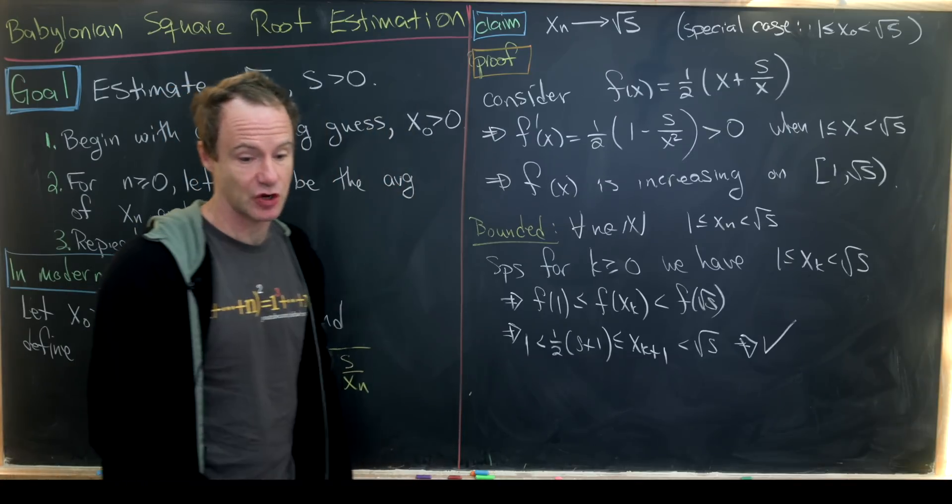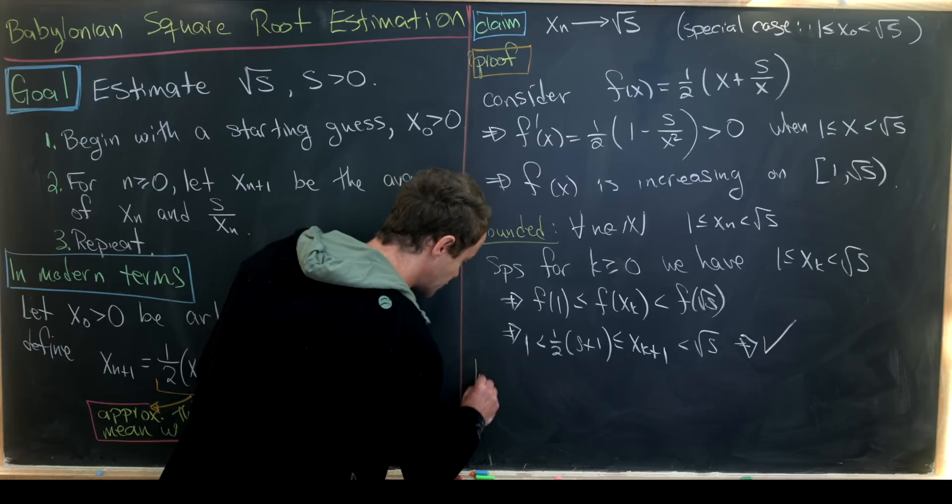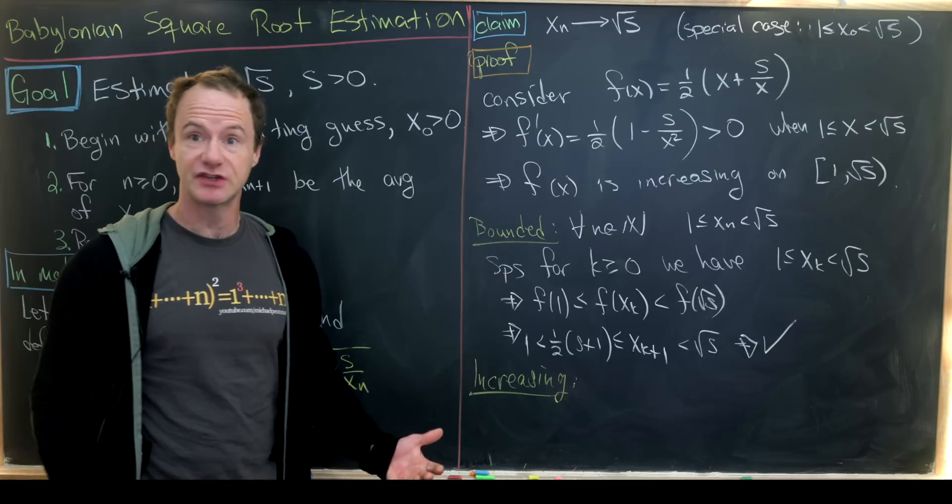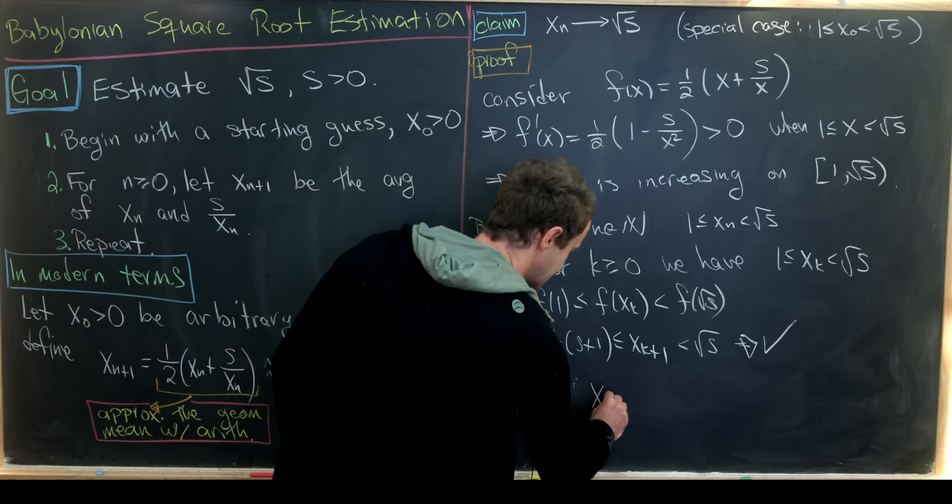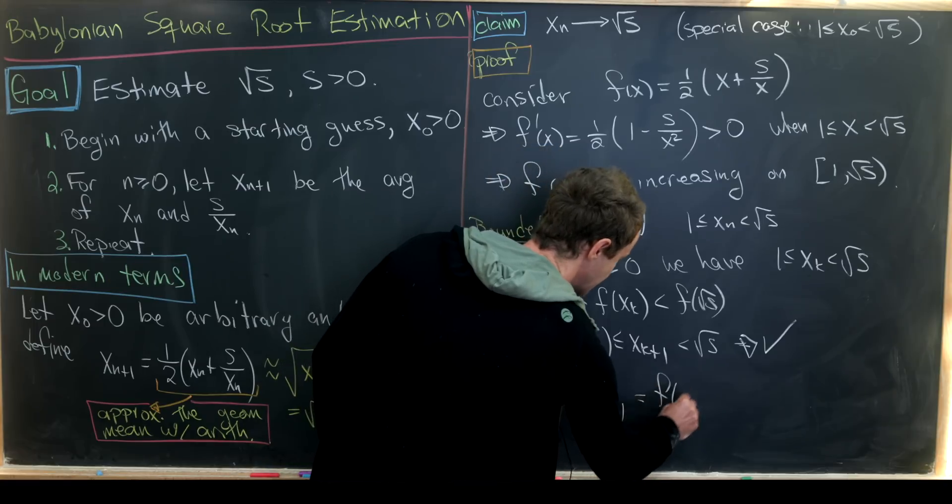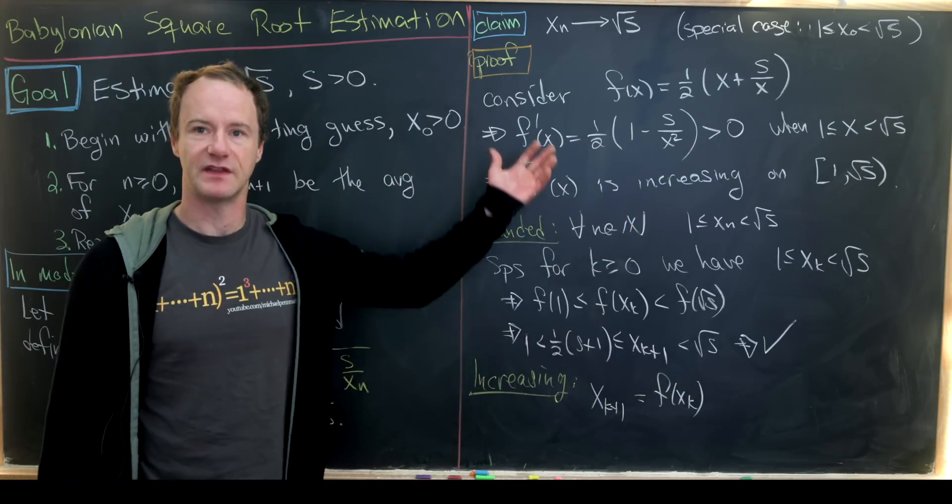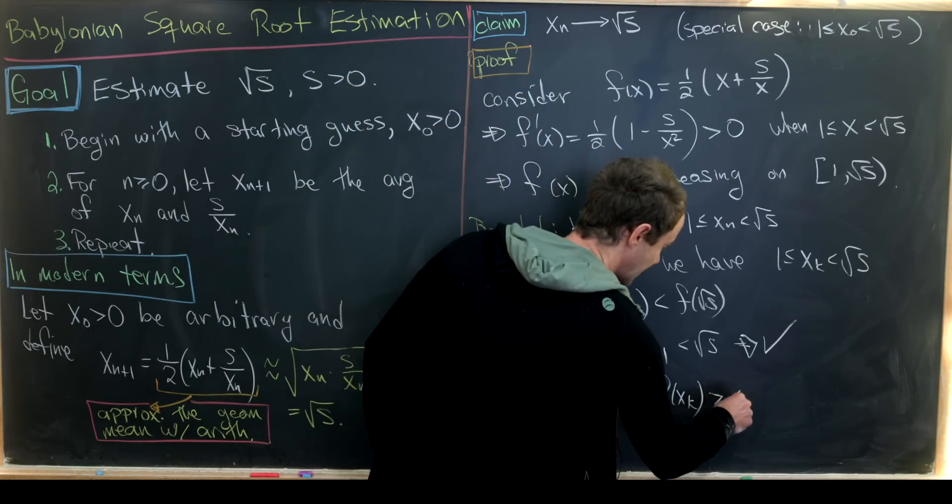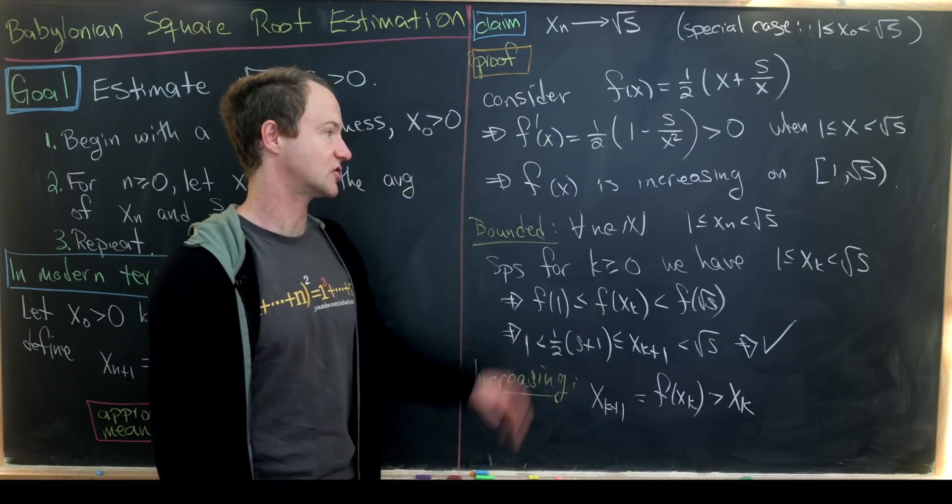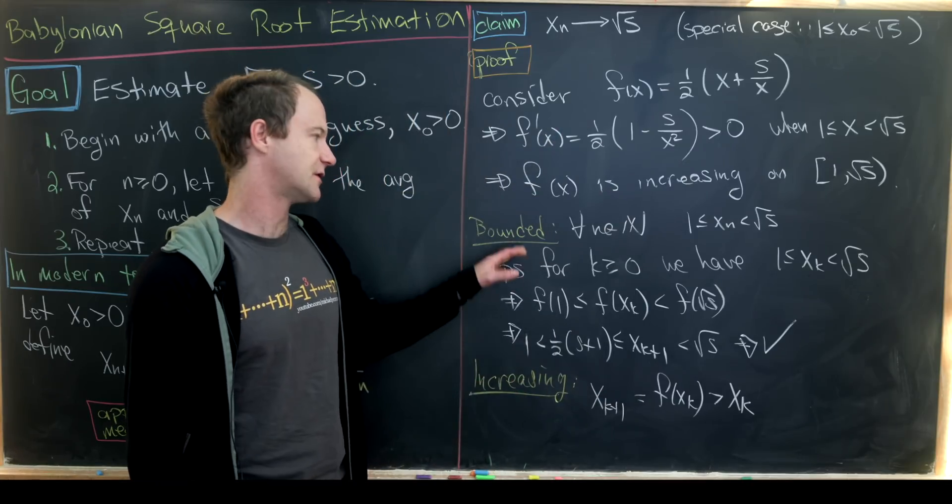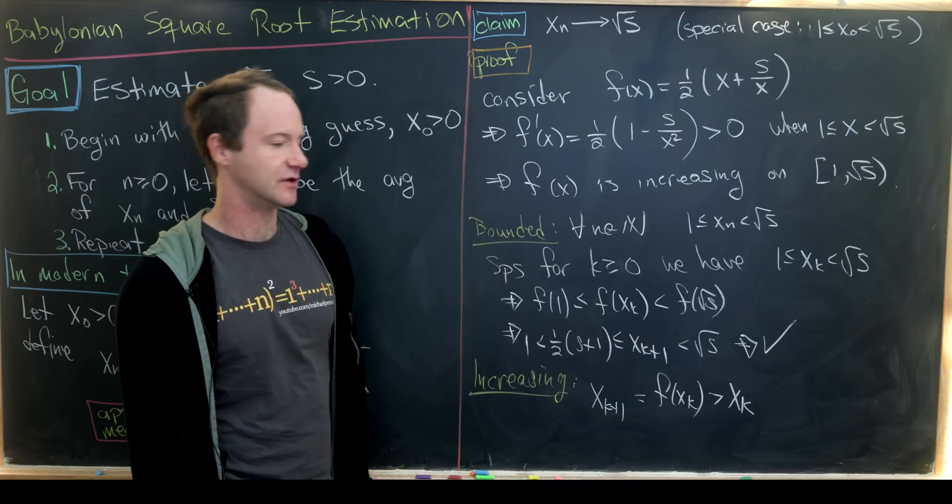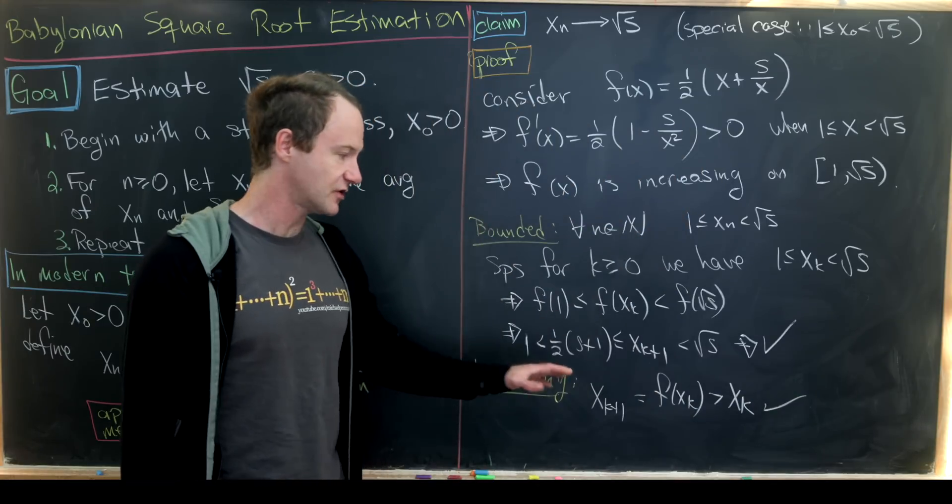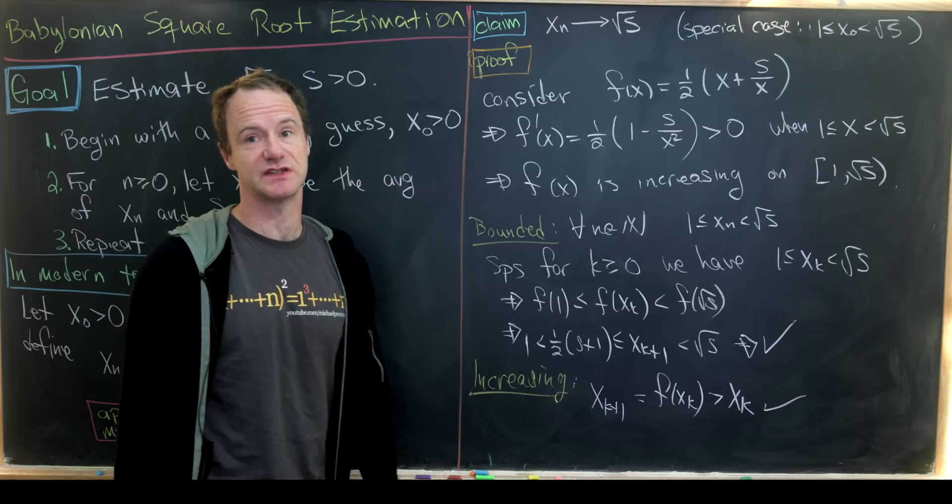And then we'll next show that this is an increasing sequence. But showing it's an increasing sequence is really pretty straightforward. Let's notice that xₖ₊₁ = f(xₖ), again by the definition of our function and by our recursion. But that is strictly bigger than xₖ based on the fact that our function is increasing in the appropriate interval, which we showed that all of these values are in the appropriate interval in this bounded proof. So we've got that this is a bounded increasing function, so that means this is a convergent sequence. Now we just have to calculate its limit.